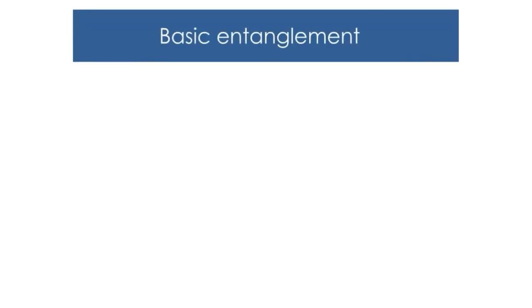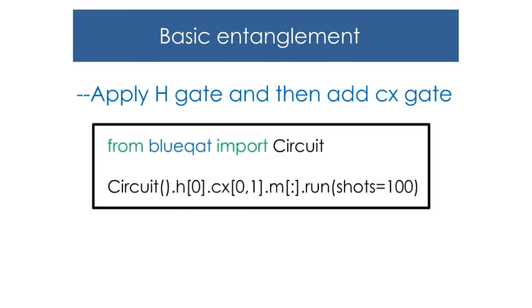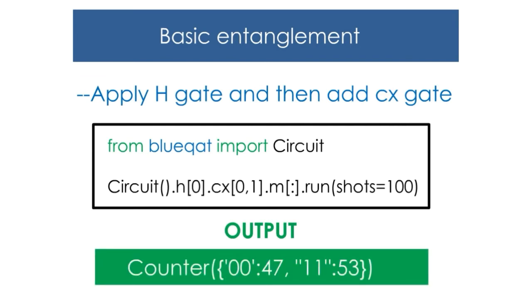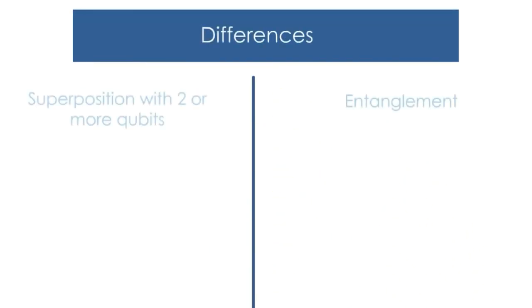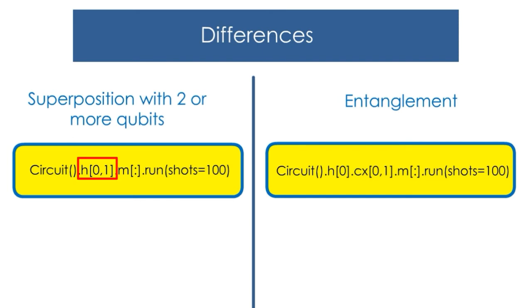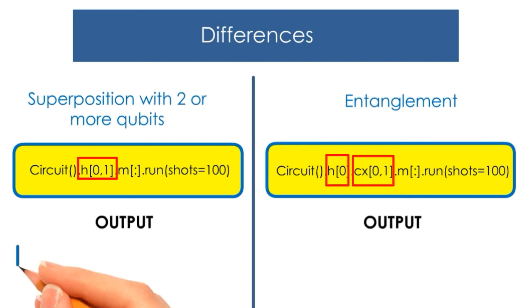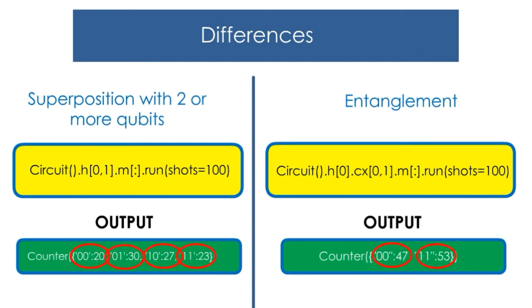As we already learned the basics of entanglement — using entanglement, there are only a few combinations of answers, but in superposition there are many combinations of answers. We have also seen the differences between superposition and entanglement. In superposition, we use only the H-gate, but in entanglement we use the H-gate and the CX-gate. As you can see in the output, there are many more combinations of answers in superposition than in entanglement.